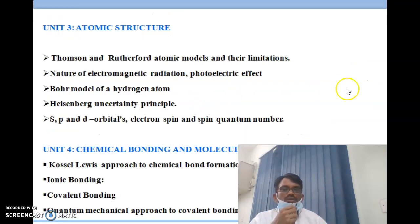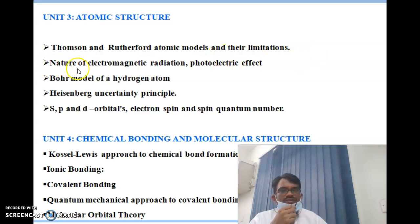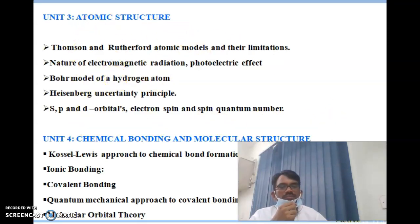Unit 3 is atomic structure, a very important topic asked in JEE Mains and Advanced. It covers Thomson and Rutherford atomic models and their limitations, nature of electromagnetic radiation and the photoelectric effect, Bohr's model of the hydrogen atom, Heisenberg's uncertainty principle, s, p, and d orbitals, and electron spin and spin quantum numbers.